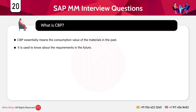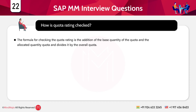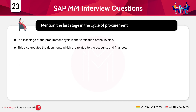The next question is: what is CBP? CBP means the consumption value of materials in the past. It is used to know about future requirements — based on past consumption of services, the average requirement of goods can be calculated. The movement type for the reversal of a goods issue is 262. For checking quota rating, the formula is: base quantity of quota plus allocated quantity quota, divided by the overall quota.